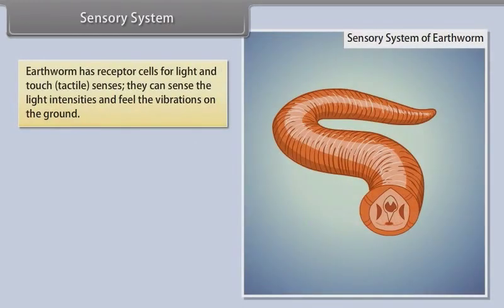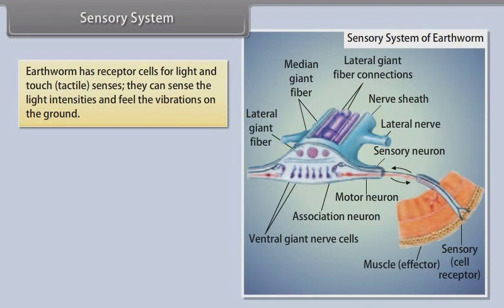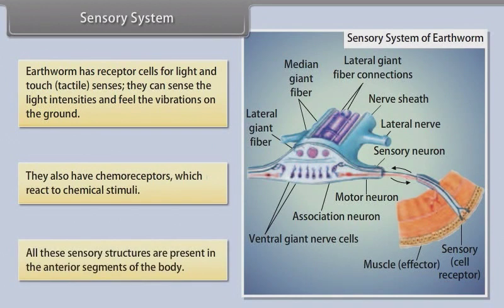Sensory System. Earthworm has receptor cells for light and touch, that is tactile senses. They can sense light intensities and feel vibrations on the ground. They also have chemoreceptors which react to chemical stimuli. All these sensory structures are present in the anterior segments of the body.